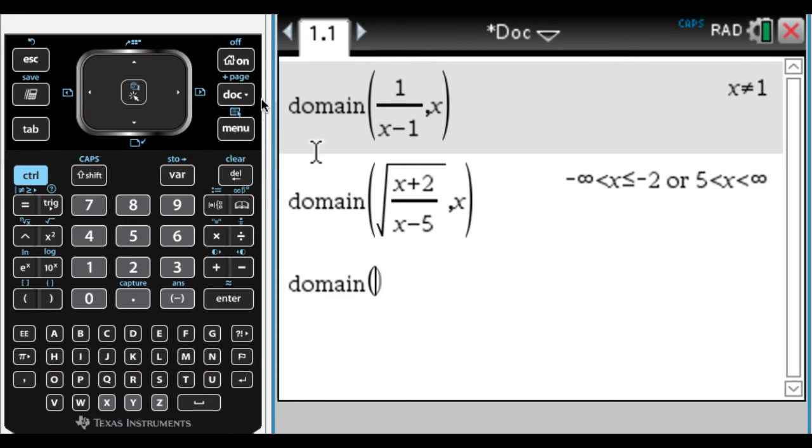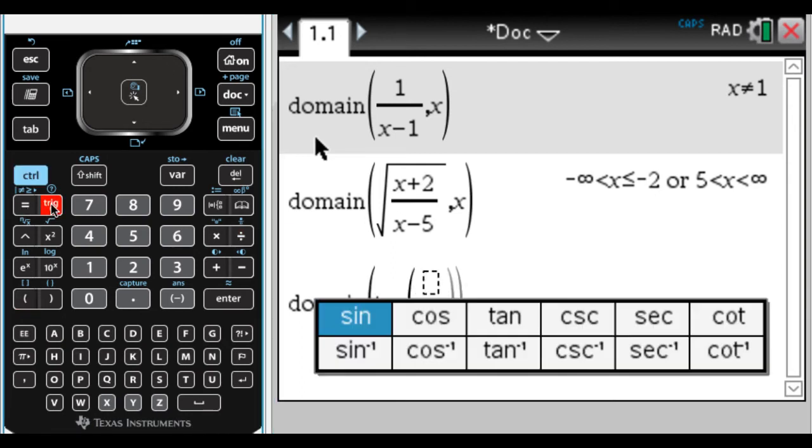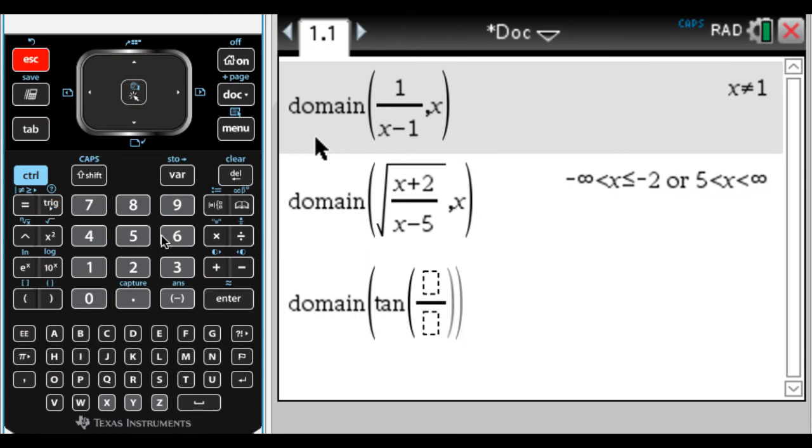So it does something weird with the trig functions. I'm typing tangent, but you of course would find it from the trig menu. So tangent of, let's say, x over 3 minus π. And then I've got to get out of that parenthesis. I've got to say comma x.